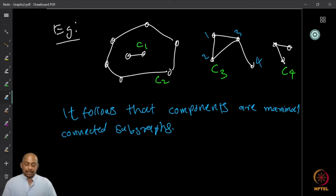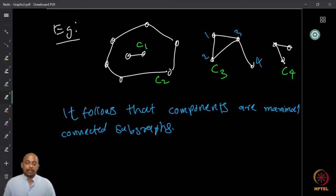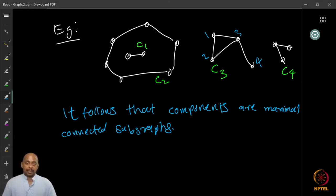Here is another example: you have C1, C2, C3, and C4 as components. It follows that the components are actually maximal connected subgraphs by definition, because they are the equivalence classes under the equivalence relation of reachability. So u and v being reachable or interconnected means you are looking at the equivalence class, which is a maximal connected subgraph.